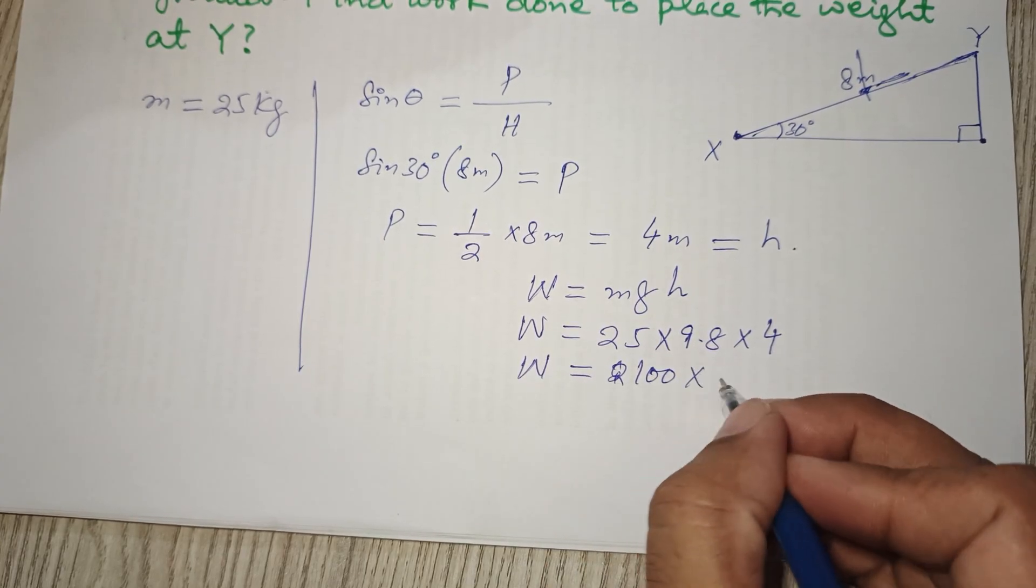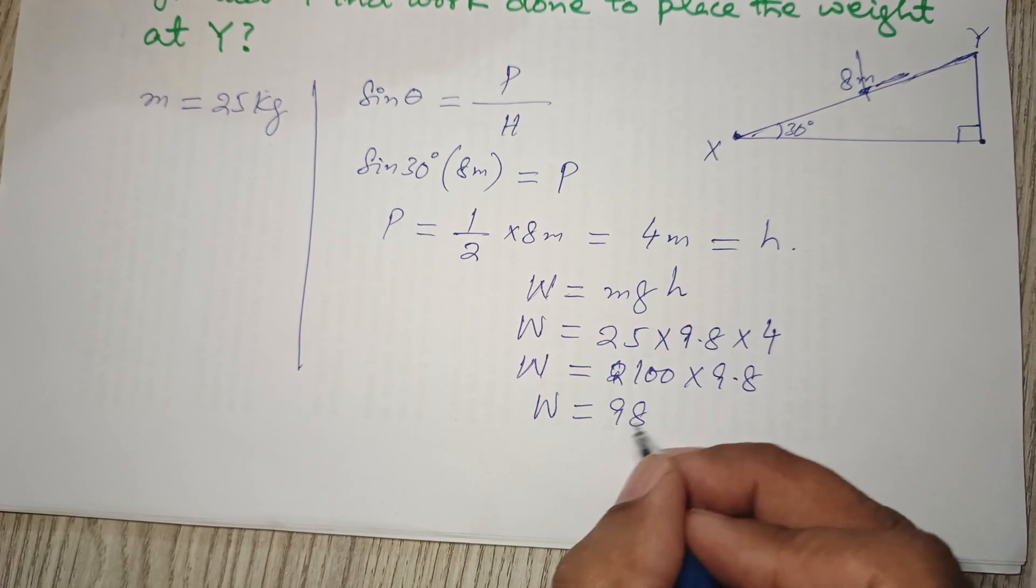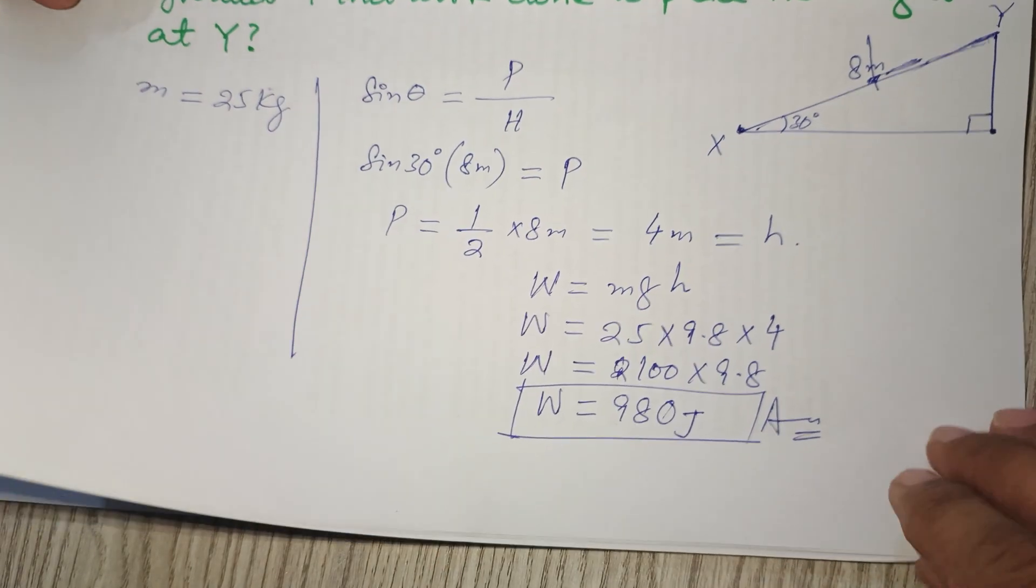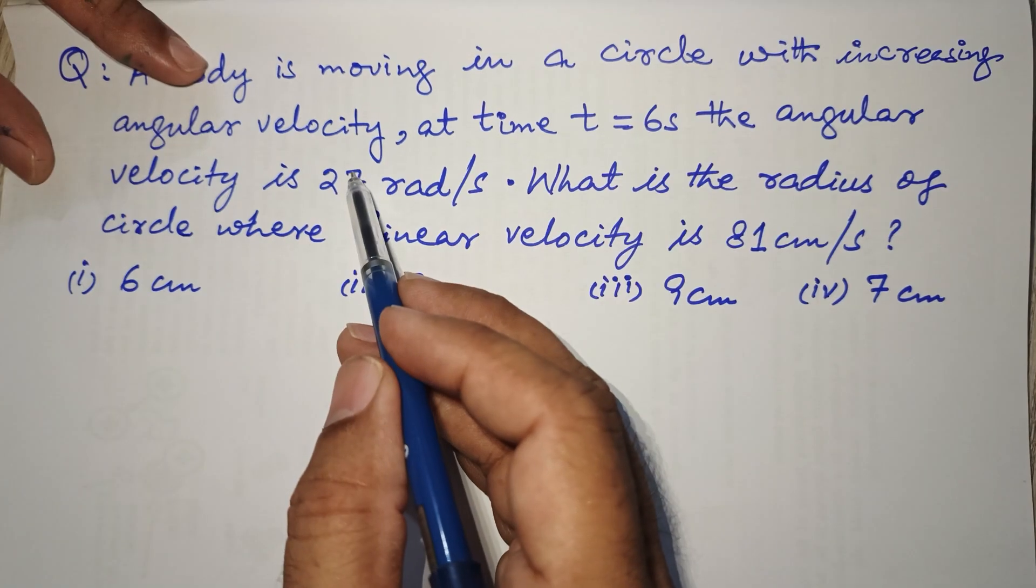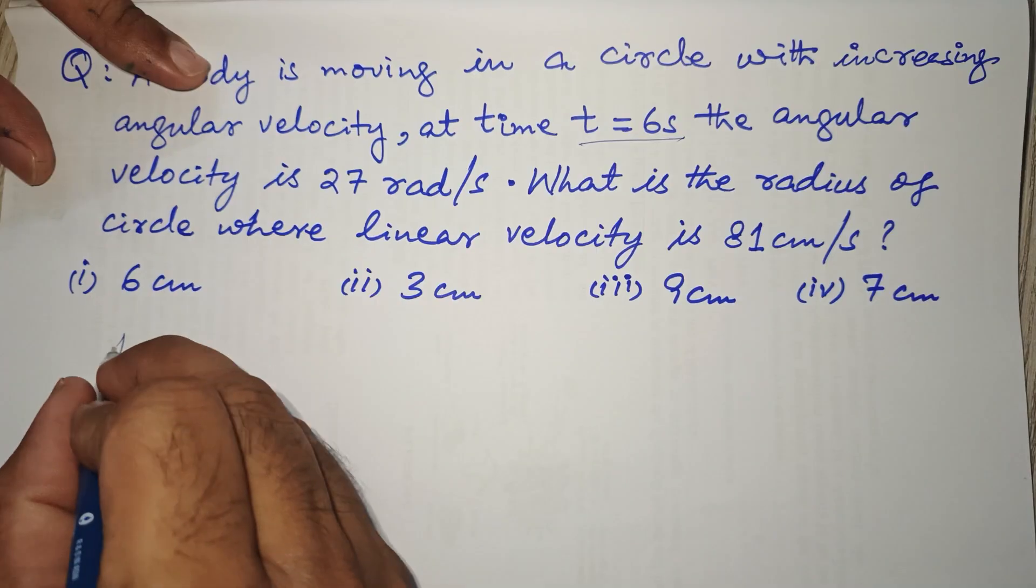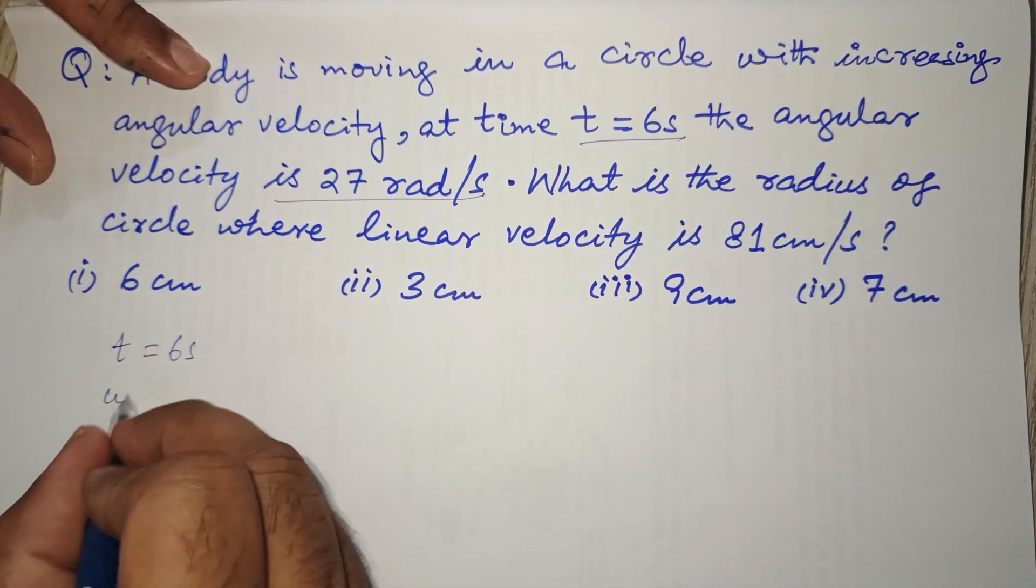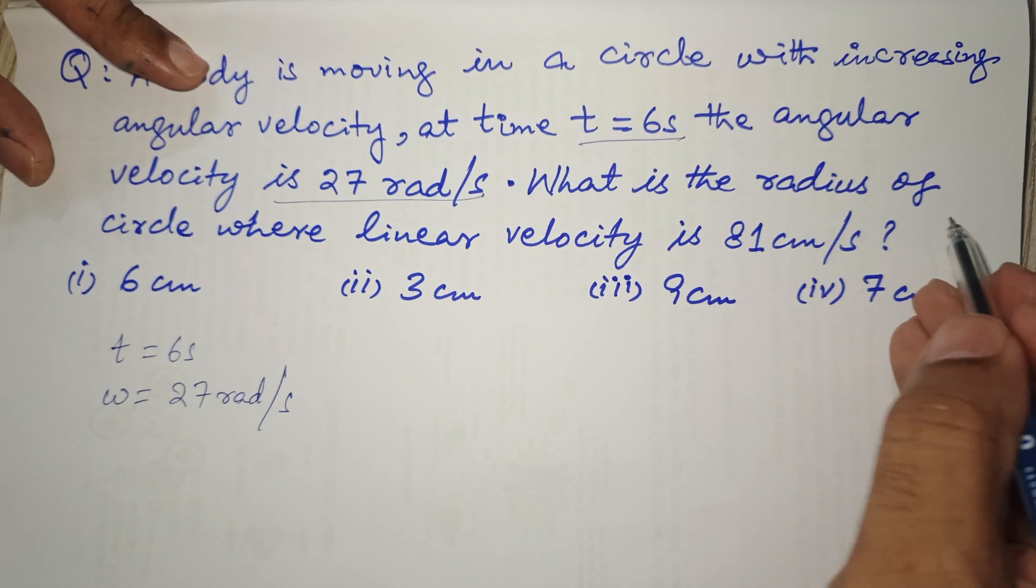Move to the next one. A body is moving in a circle with increasing angular velocity. At time t equals 6 seconds, the angular velocity is 27 radians per second. What is the radius of the circle?